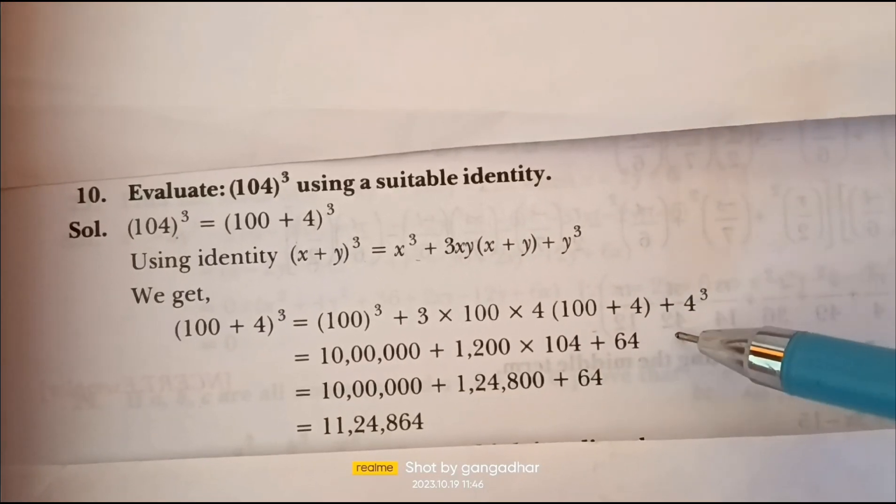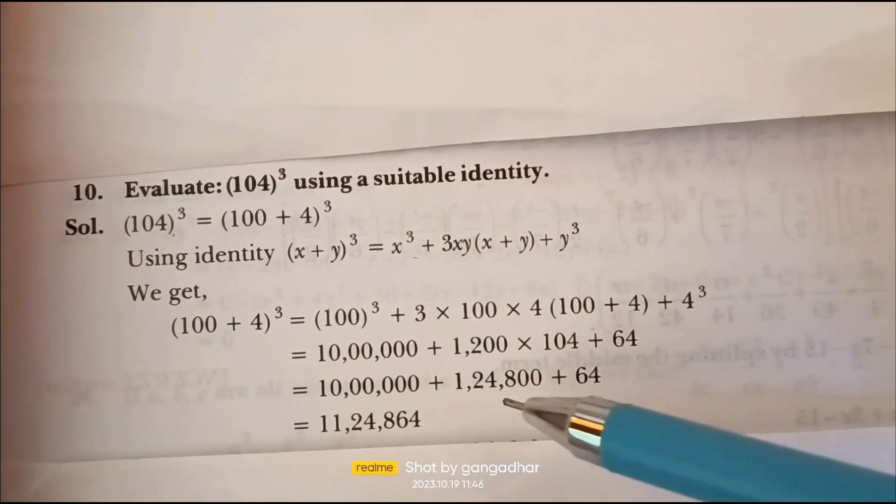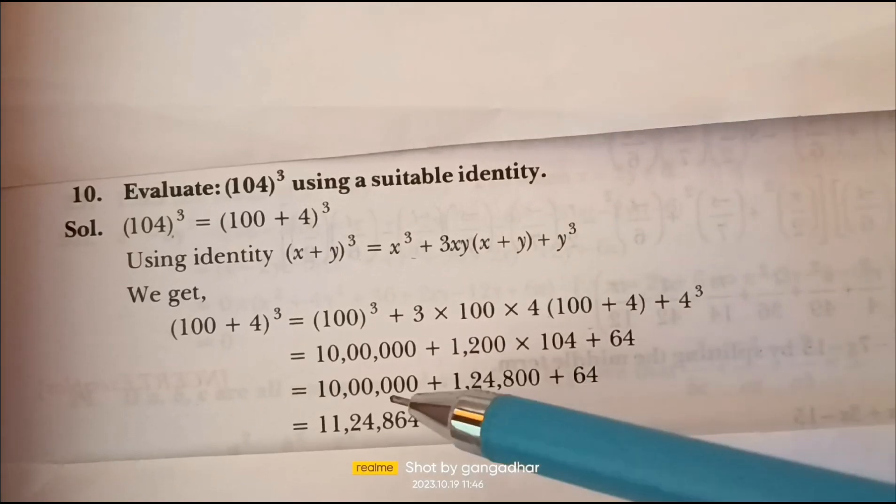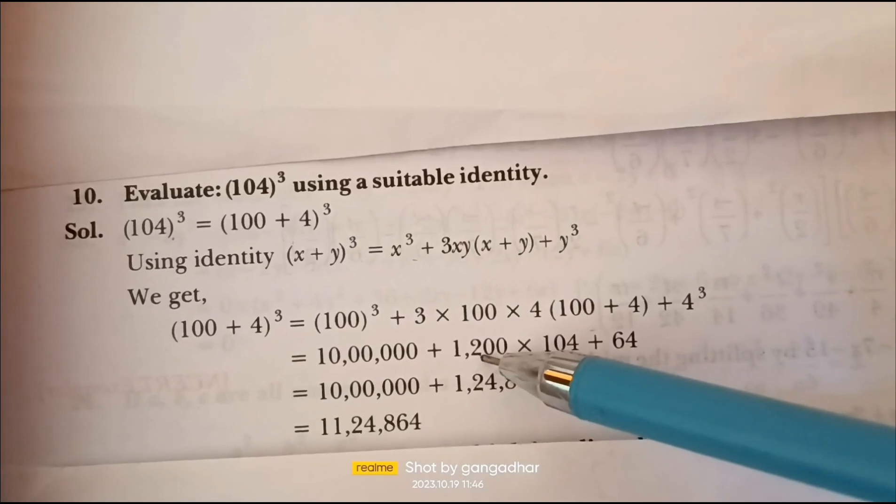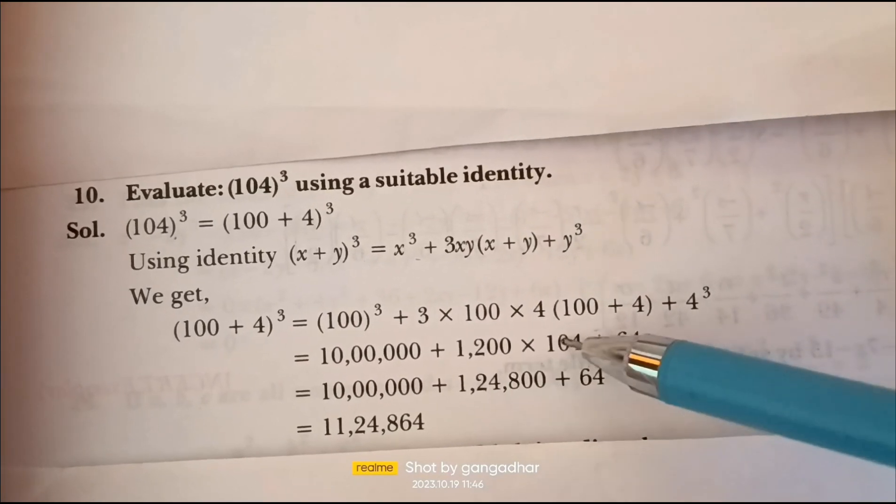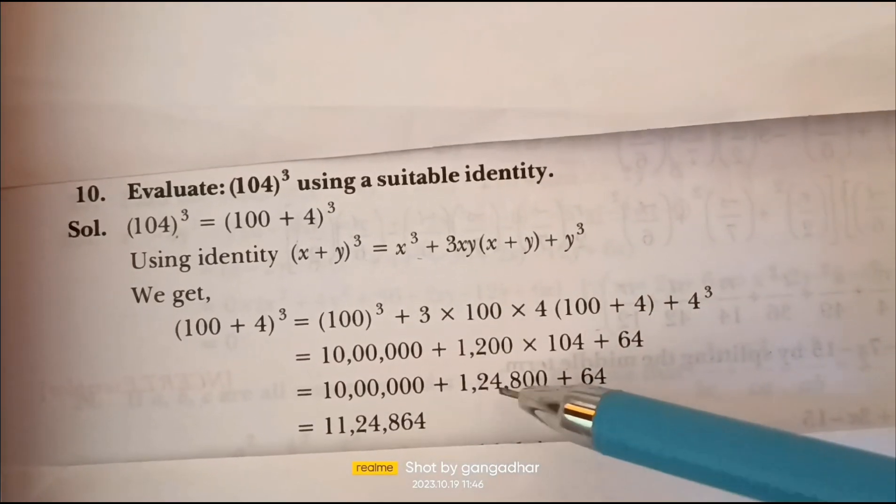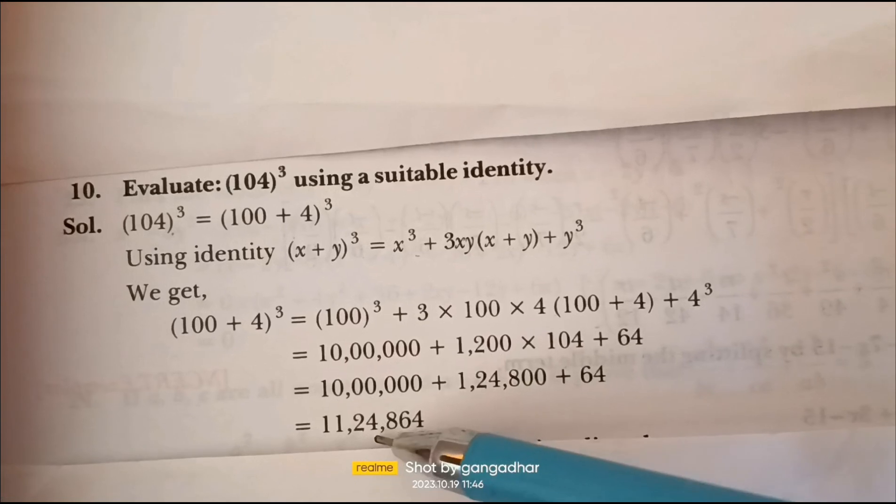4³ equals 64. 1,200 × 104 equals 1,24,800. Adding these three terms: 10,00,000 + 1,24,800 + 64, we get the final answer 11,24,864.